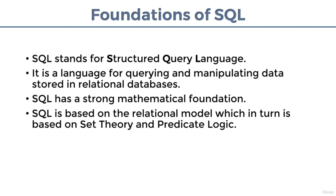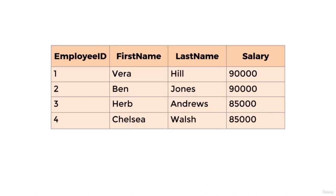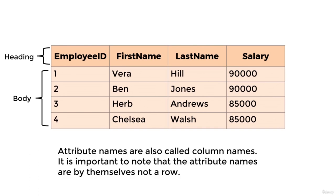The relational model is a mathematical model for data management and manipulation, first created by Ted Codd in 1969, and is the cornerstone of SQL and relational databases. Even though SQL is based on the relational model, it deviates from the model in a few ways. A relation in the relational model is what SQL attempts to represent with a table. A relation has a heading and a body — the heading is a set of attributes (represented by columns), each with a type; the body is a set of tuples, which SQL represents using rows.